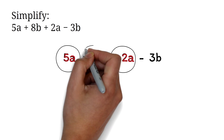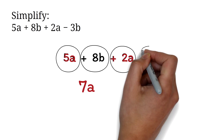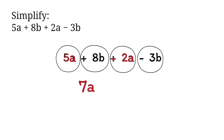We can see that 8b and minus 3b are also like terms. They both have the letter b. We have 8 minus 3, which is 5, then we bring the b after it. So the simplified form is 7a plus 5b.